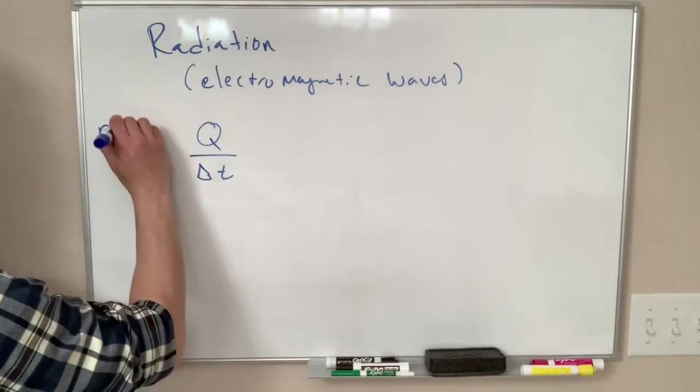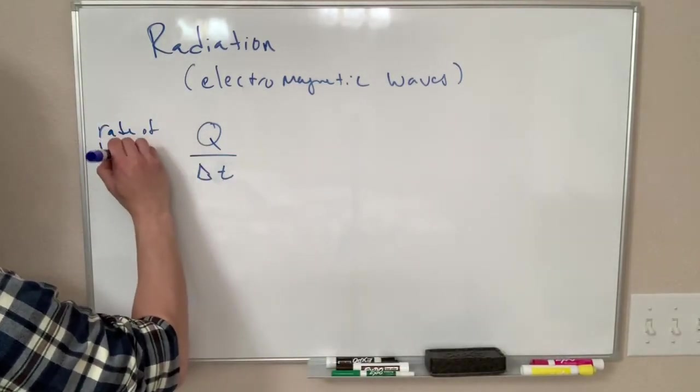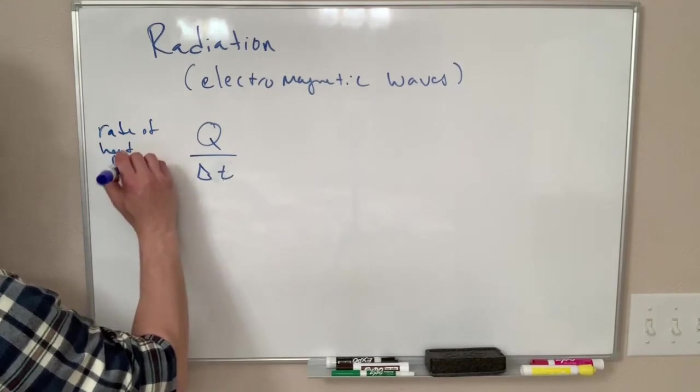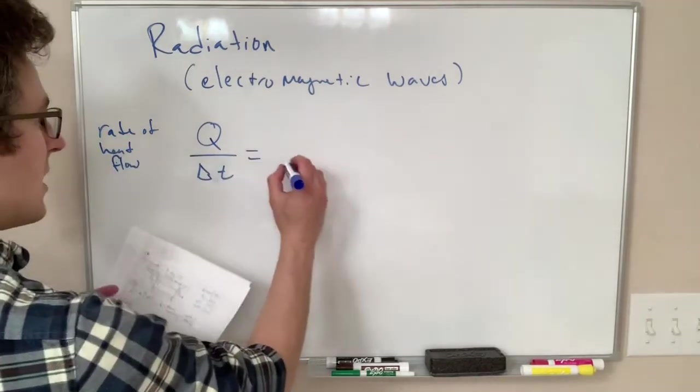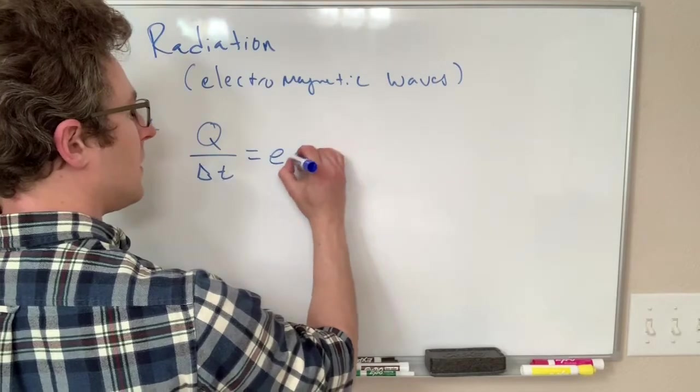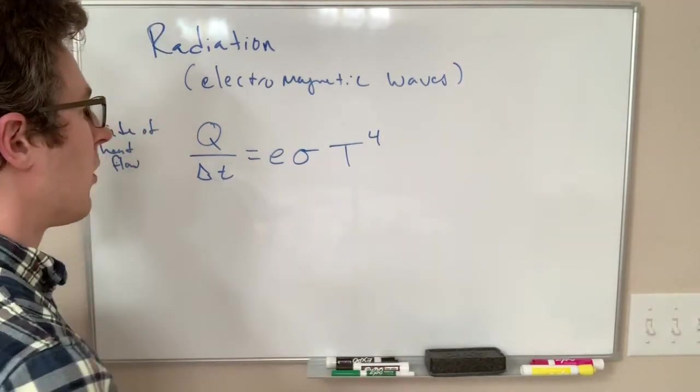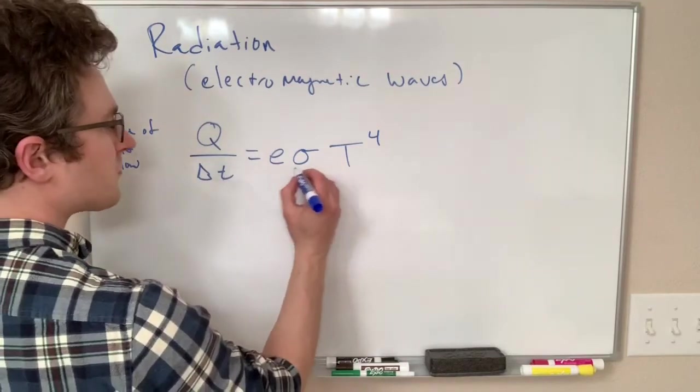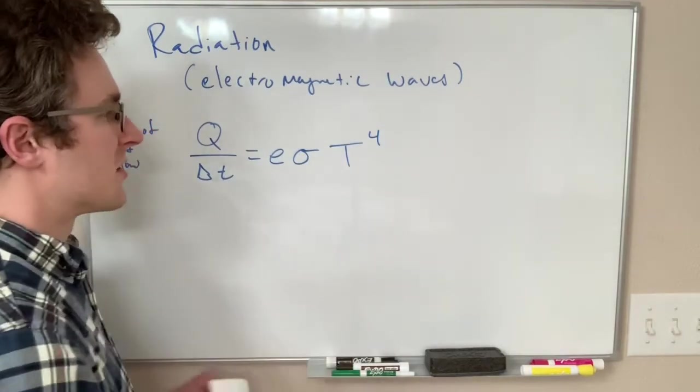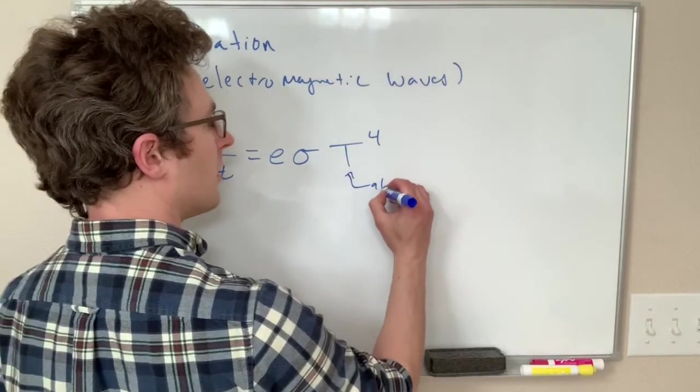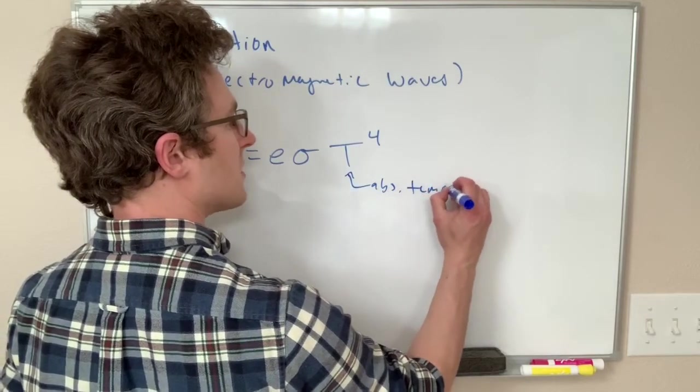So this for radiation is equal to E sigma T to the fourth. As you're about to see, this equation is wrong, don't write it down, there's an additional factor of A that I'm going to add shortly. So T is our temperature and this is absolute temperature, so this has to be of course in kelvin.